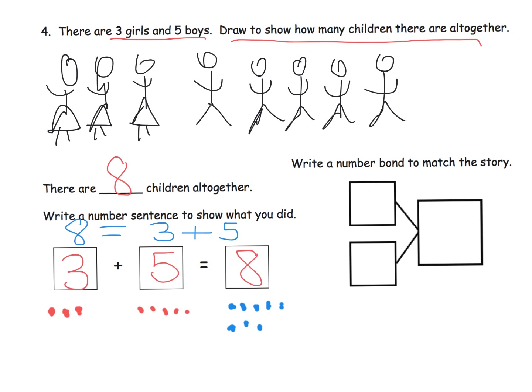And then over here, way over here, we are going to write a number bond. So we know that our part-part is three and five and our whole is eight. So one way to display it might look like this, three, five, and eight. And remember, teachers, addition is commutative, so if students want to put the five up at the top and the three down at the bottom, that is absolutely okay.